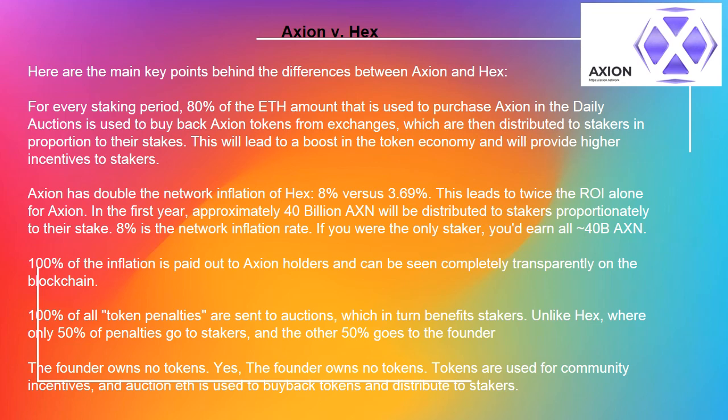Axion has double the network inflation of HEX — 8% versus 3.69%. This leads to twice the ROI alone for Axion. In the first year, approximately 40 billion AXN will be distributed to stakers proportionately to their stake. 8% is the network inflation rate. If you were the only staker, you'd earn all 40 billion AXN.